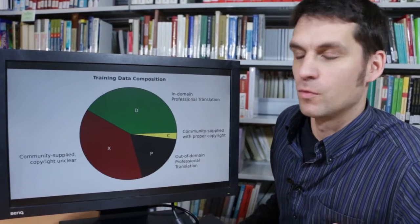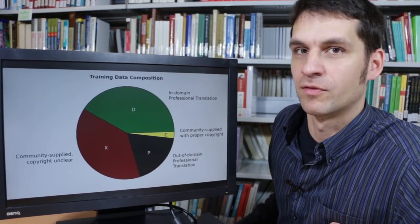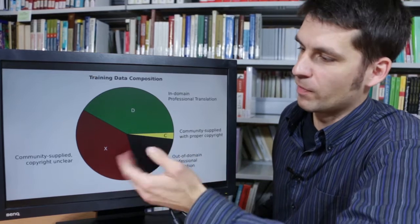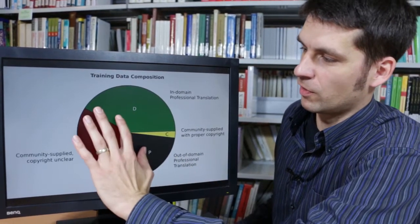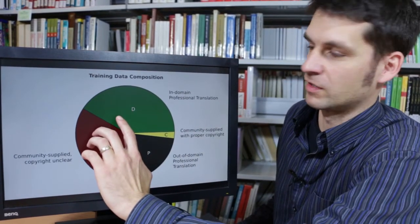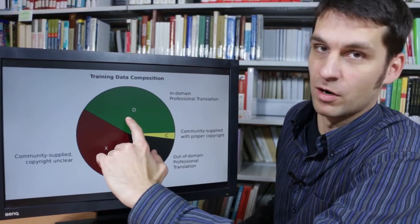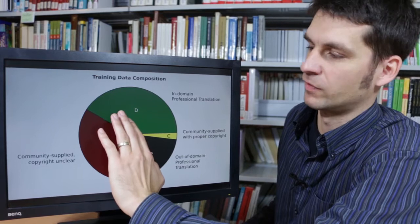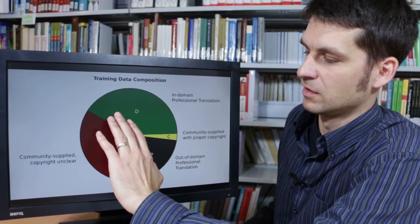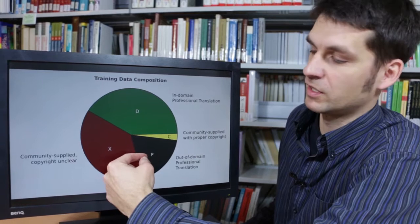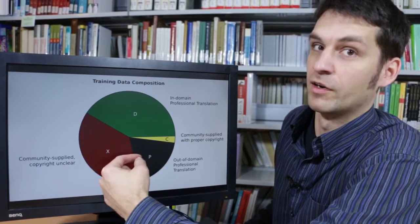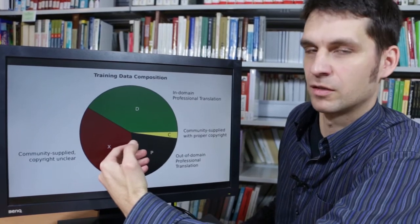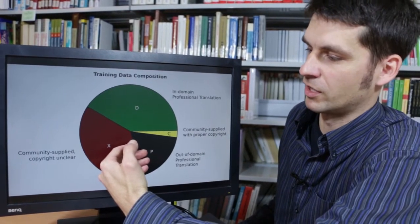In 2007, we had a look at how different types of training data contribute to the translation quality. Our corpus had four main parts. Two parts of that were produced by professional translators, and the green part was actually in-domain. It was the news types of text that we wanted to translate in the end in our test set. While the other part of the professional translated data, the black part, was unrelated text. It was well-written but it had nothing to do with our test corpus.